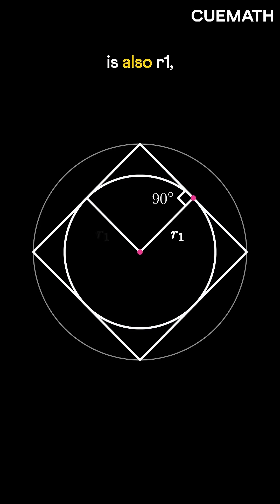Now this length is also r1, since it's the radius too. And by symmetry, this length will also be r1.